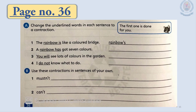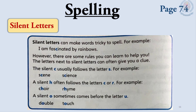Turn to page number 36 in your workbook. Here you are given two activities. Part A: Change the underlined words in each sentence to a contraction. Part B: Use these contractions in sentences of your own. Now you can answer these exercises in your workbook.